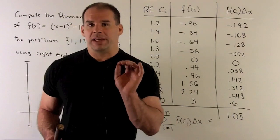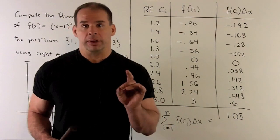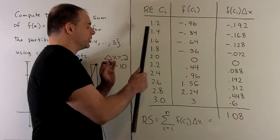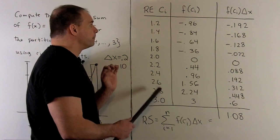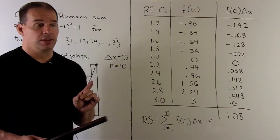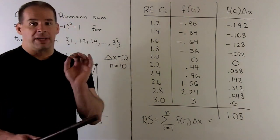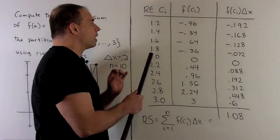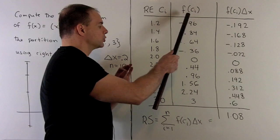So right now, we get into the area of just bookkeeping. So all of our right endpoints, we start at 1.2, go all the way down to 3, move our way down by adding a .2, which is our delta x. Go to a calculator, put each of these numbers into our function, so we work them out.